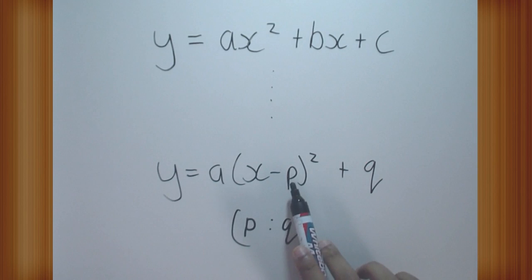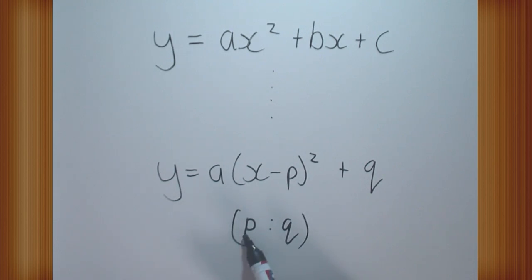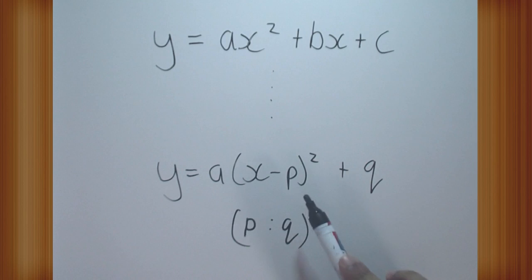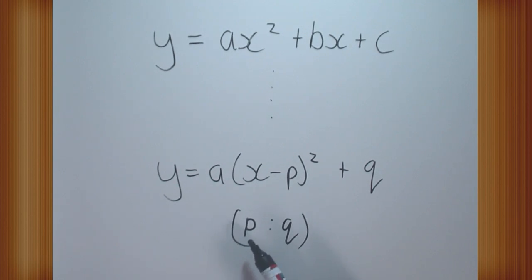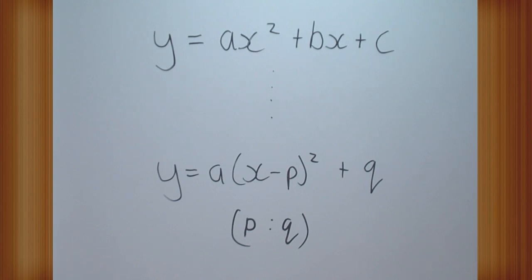Notice that it's a minus p here and it's a positive p in the turning point. So x minus 3 means the x coordinate of the turning point would be 3, not minus 3. So let's learn how to complete the square.